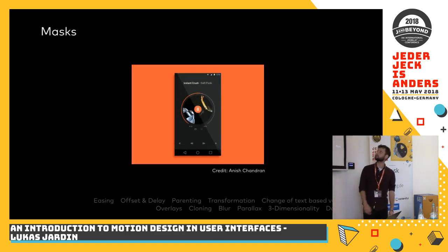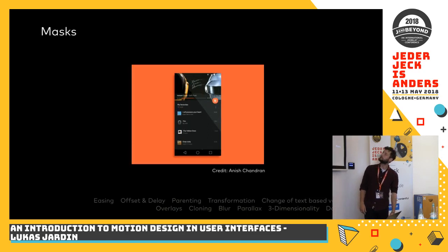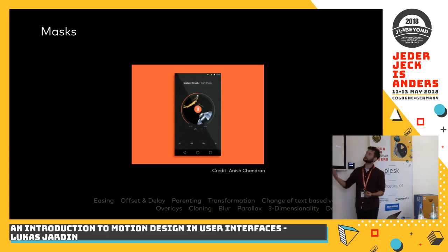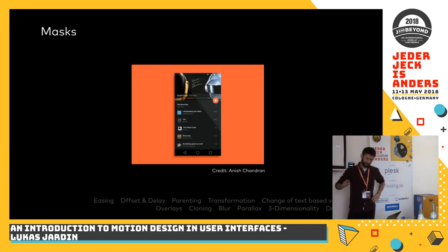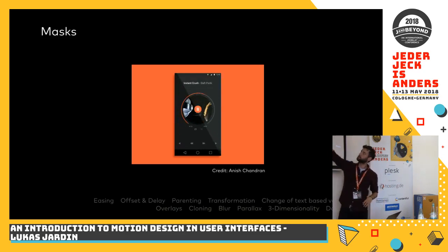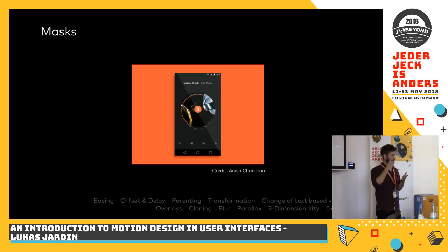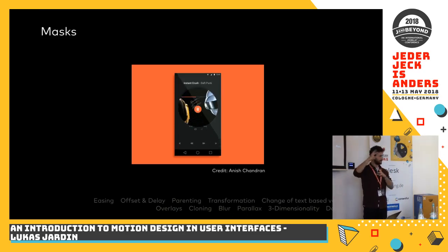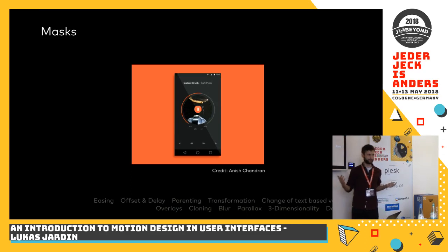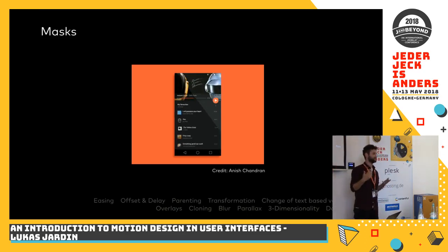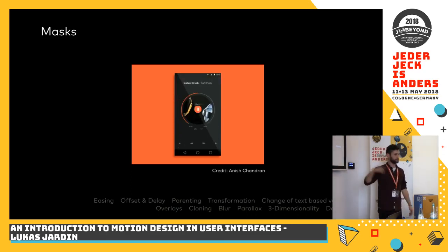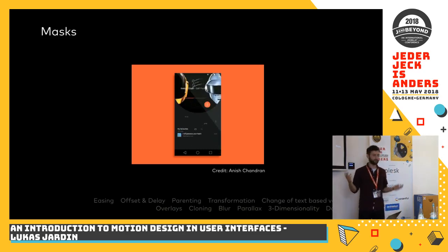The next technique is masking — a real fluent page transition. It feels nice, you know what's happening. It's similar to knowing in nature: if a CD is turning in the CD player, you know it's playing; then it flips up and you know something else happened — you're at the album cover. It's easier for people to recognize context changes. It's more fluid and beautiful than simply switching a page.